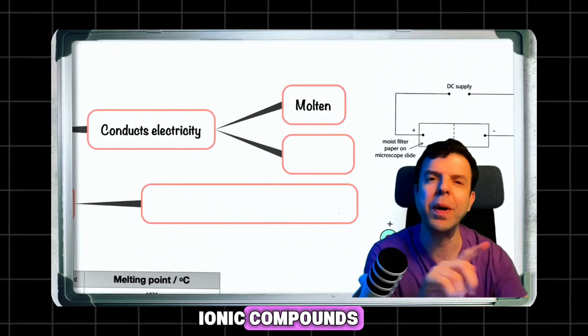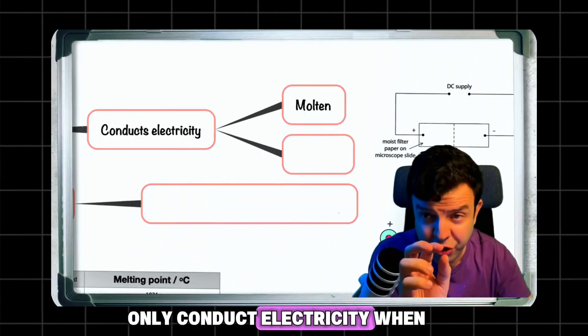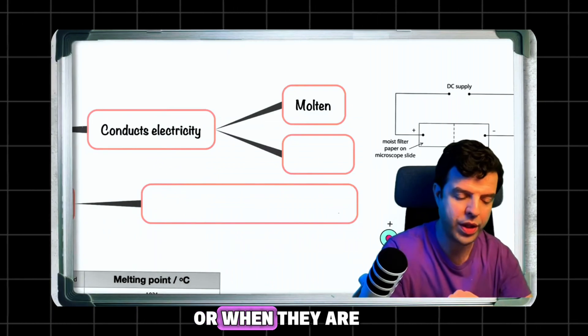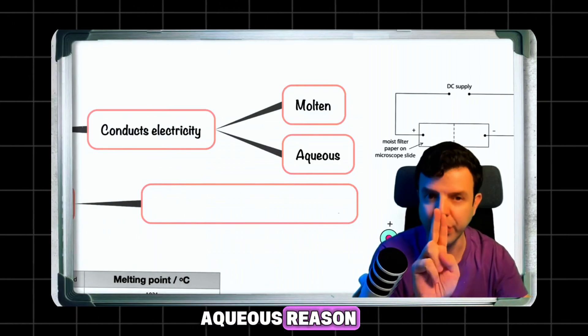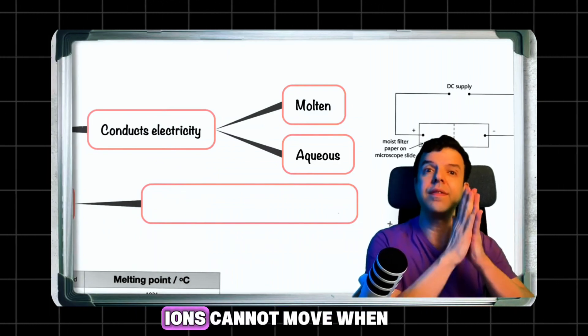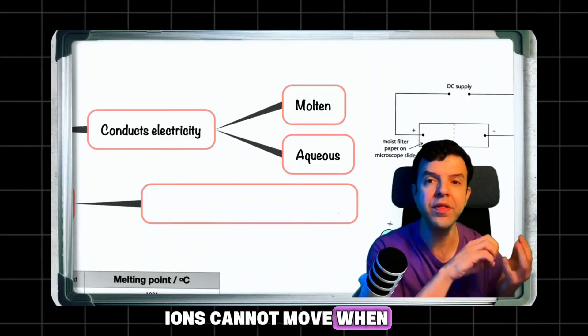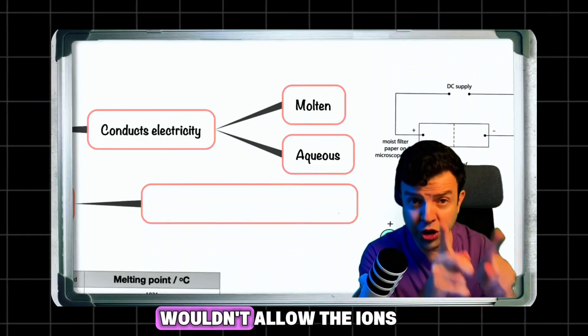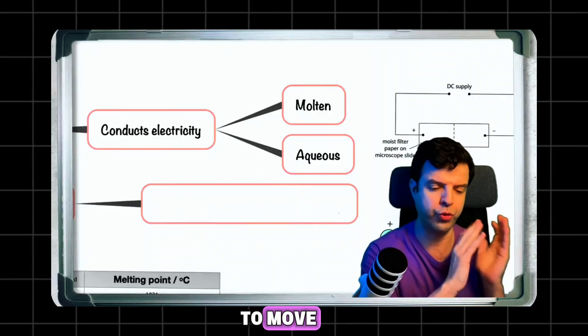only conduct electricity when they are molten or aqueous. The reason is that ions cannot move in the solid form - the ionic lattice doesn't allow the ions to move.